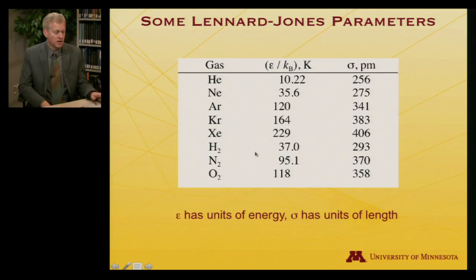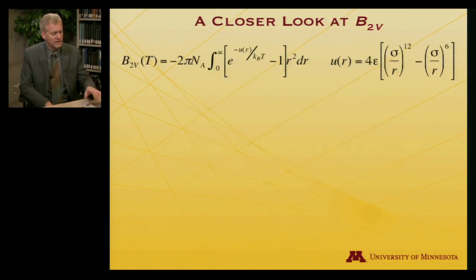In the diatomics, hydrogen is least attracted to itself, nitrogen by more, and oxygen by more. So the oxygen well depth is deeper than the nitrogen well depth. Oxygen molecules are more attracted to one another. Sigma, which is here tabulated in picometers, can be thought of as a measure of molecular size. Not surprisingly, as we go from helium to xenon, the noble gases get bigger. They get a whole lot more electrons and their valence shells expand. Hydrogen, being formed from the lightest element, is smaller than the other two diatomics.